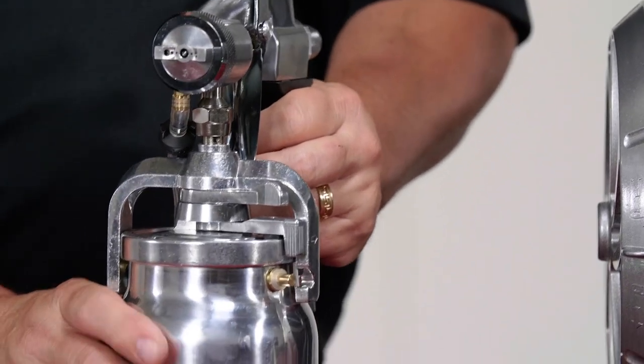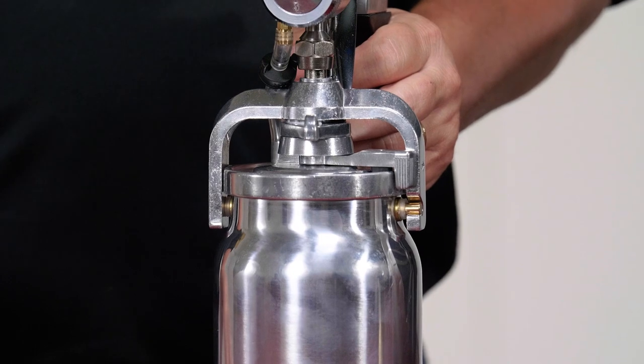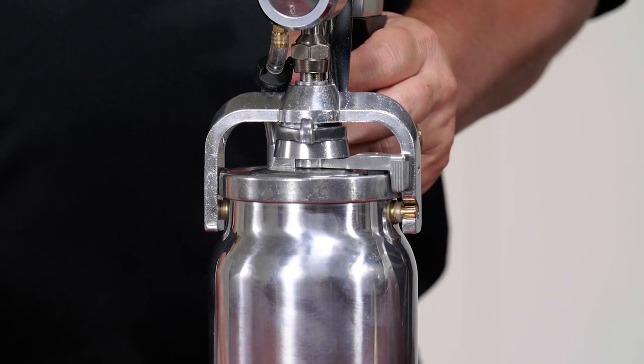With the cup mounted in the yoke, moving the first lever to the left tightens the latch. Take care not to over-tighten the latch. Only lightly snug is needed.